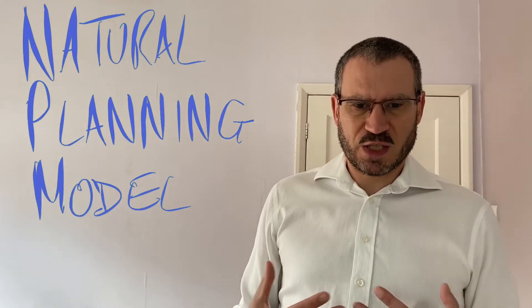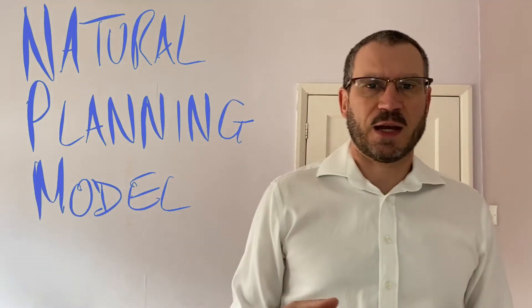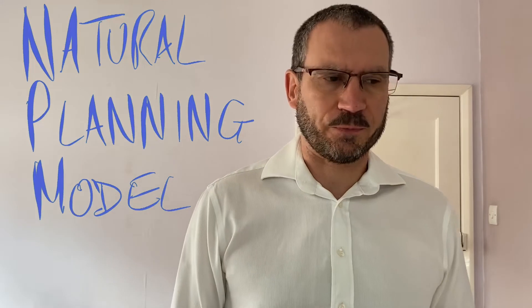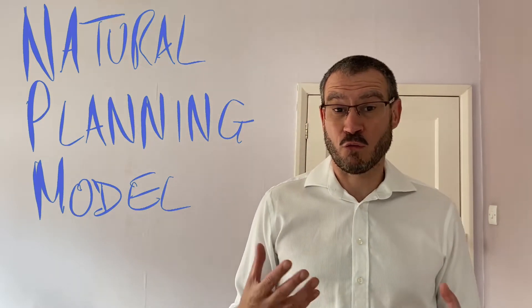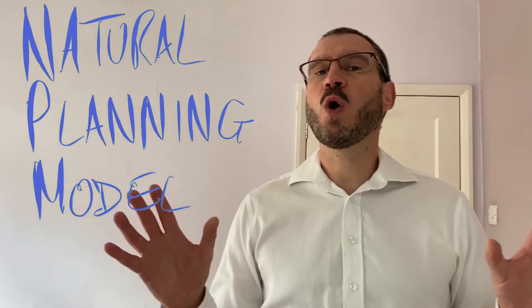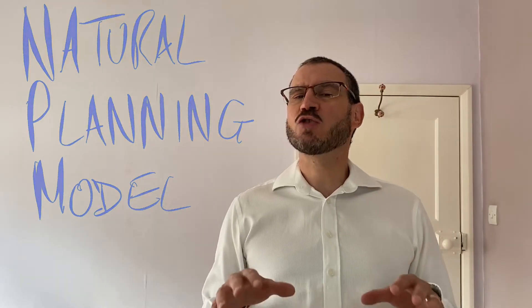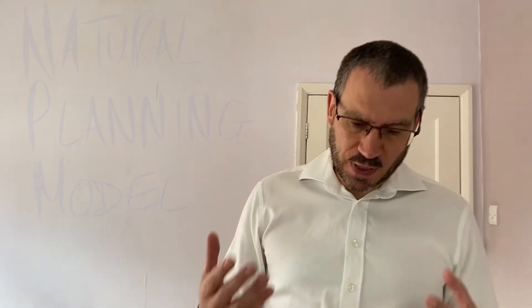So we start off on something and we're straight into the Gantt charts and the planning and the working out who's going to do what. And it's often only when things start to go wrong that we all go, whoa — what are we actually trying to achieve here? So the natural planning model gives us a framework to enable that thinking consciously.